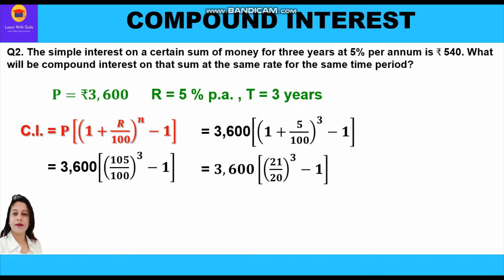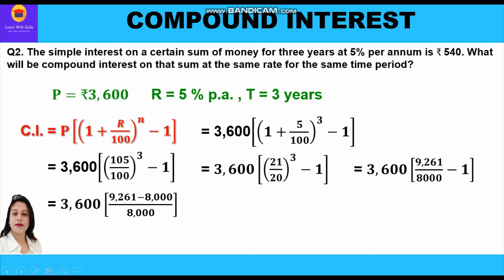Computing (21/20)^3 = 9261/8000. So CI = 3600 × [9261/8000 − 1]. Taking LCM: 3600 × [(9261 − 8000) / 8000] = 3600 × 1261/8000.